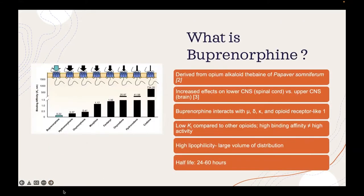What is buprenorphine? This is a partial opioid agonist, as it partially activates the mu receptors even when fully binding to the receptors, used for pain and OUD treatment. It is derived from the opium alkaloid thebaine of the Papaver somniferum poppy. It has many chiral centers and a morphine backbone.